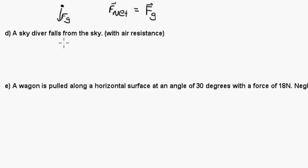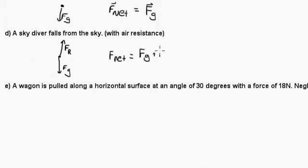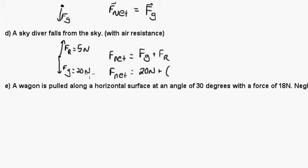Next question: a skydiver falls from the sky with air resistance. This time you have the force of gravity going down and the resistive force going up. So F-net equals force of gravity plus the resistive force. For example, if the force of gravity is 20 newtons and the resistive force is 5 newtons, then F-net equals 20 newtons plus negative 5 newtons — making sure to include the negative since it's in the opposite direction — giving a net force of 15 newtons.